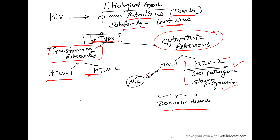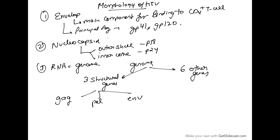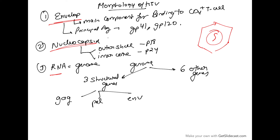Regarding morphology, HIV has three main components: an envelope, a nucleocapsid, and a genome. The envelope is the main component responsible for binding to CD4-positive T cells.